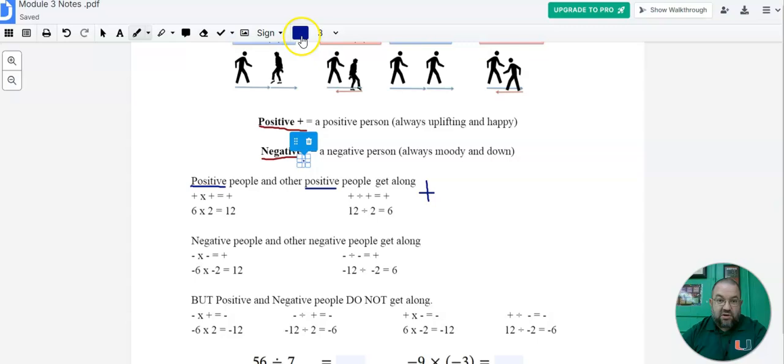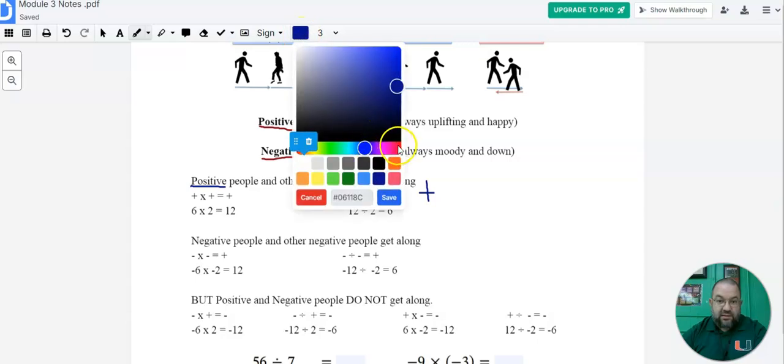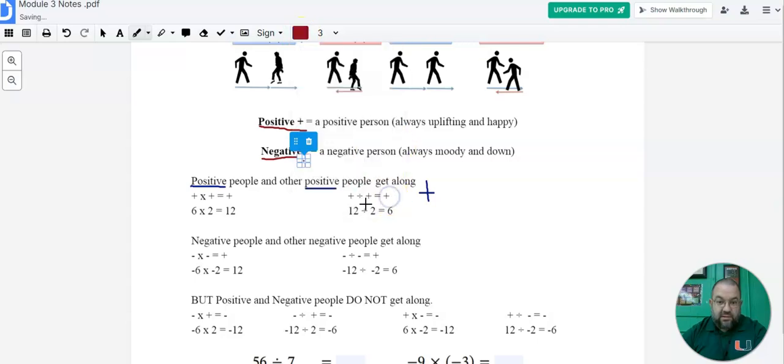Now negative people and other negative people, they get along. So positive people get along with positive people, negative people get along with other negative people. So that's how their friends work for some reason. Again, it's a silly analogy, but we're going to figure it out here in a minute.